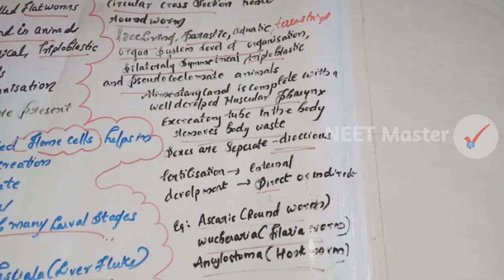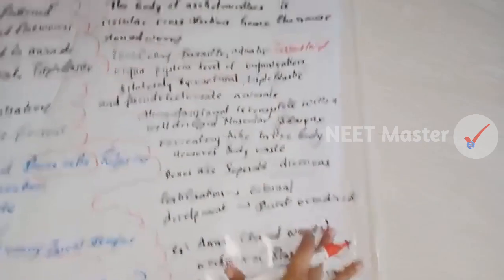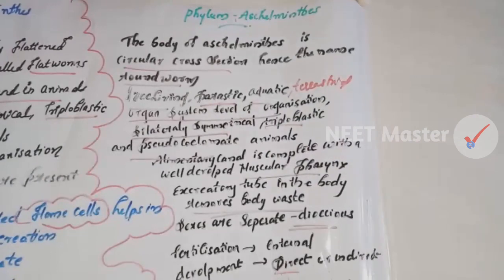Examples of Aschelminthes include Ascaris (roundworm), Wuchereria (filarial worm), and Ancylostoma (hookworm). The body has a circular cross-section. They are free-living, aquatic, or terrestrial, and also exist in plants and animals in parasitic forms.